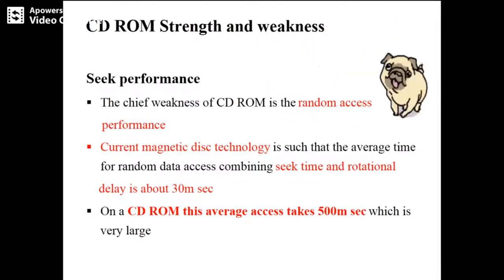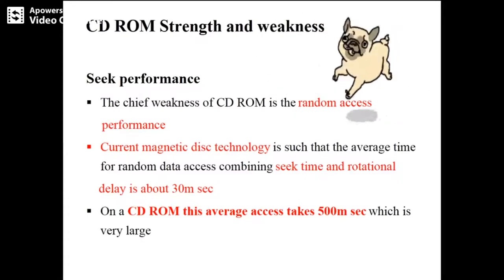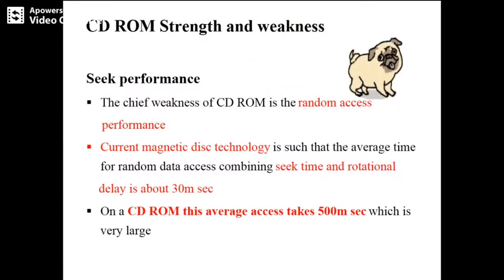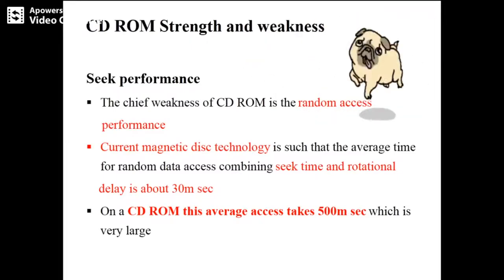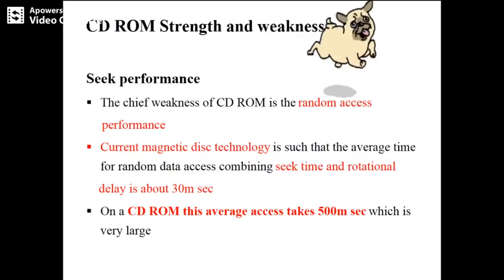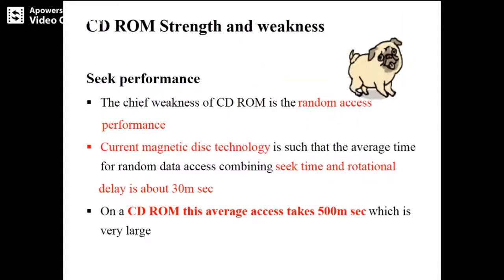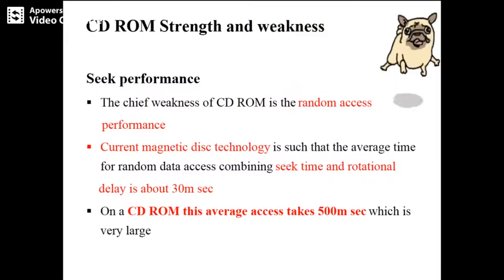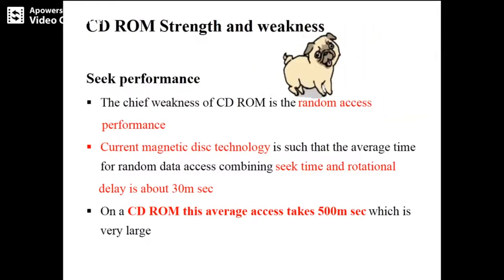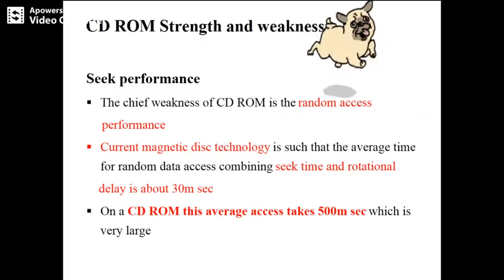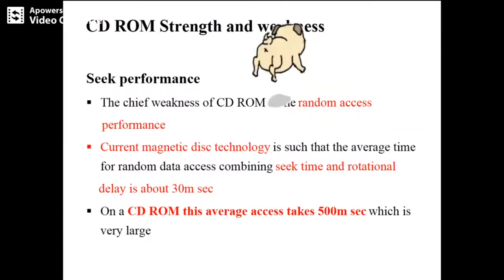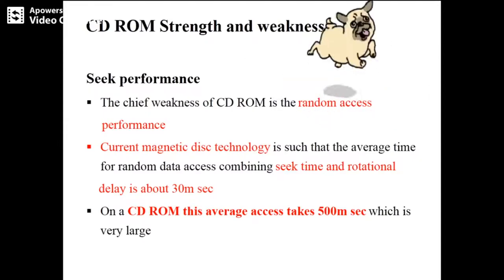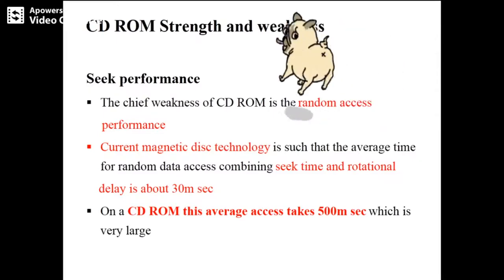The first thing we are looking at is seek performance. Seek is the time required to move the arm to a particular position or sector. Seeking is very time-consuming, so if your seek time is less, your performance will be increased. The chief weakness of CD-ROM is its random access performance.